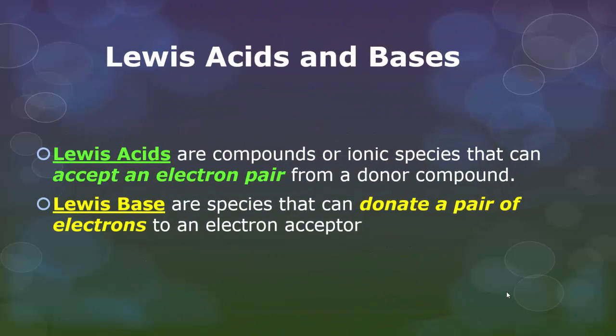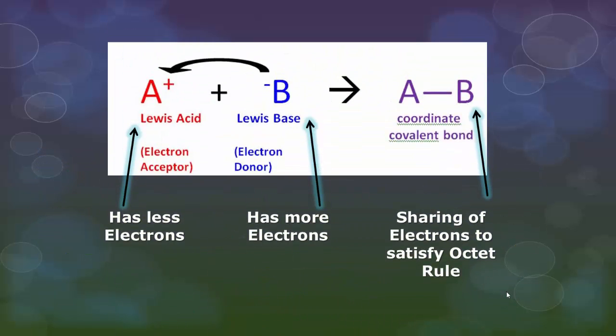Okay, so finally we're on Lewis acid-base theory. It's the last of the theories. Lewis acids are compounds or ionic species that accept an electron pair from a donor compound. A base is one that donates the pair of electrons to an electron acceptor. So we're now looking at ions, positively and negatively charged ions. And if you also remember, Lewis is the guy who did the Lewis dot diagram, so he's going to be using those electrons in the dot diagram to really explain what's going on here. So we're noticing our electron acceptor, something that wants the electrons, is going to be positively charged because it has less electrons than a neutral atom. But when your deficit and your surplus come together, you'll notice that we have the sharing of the electrons to satisfy our octet rules, which we also call a coordinate covalent bond.